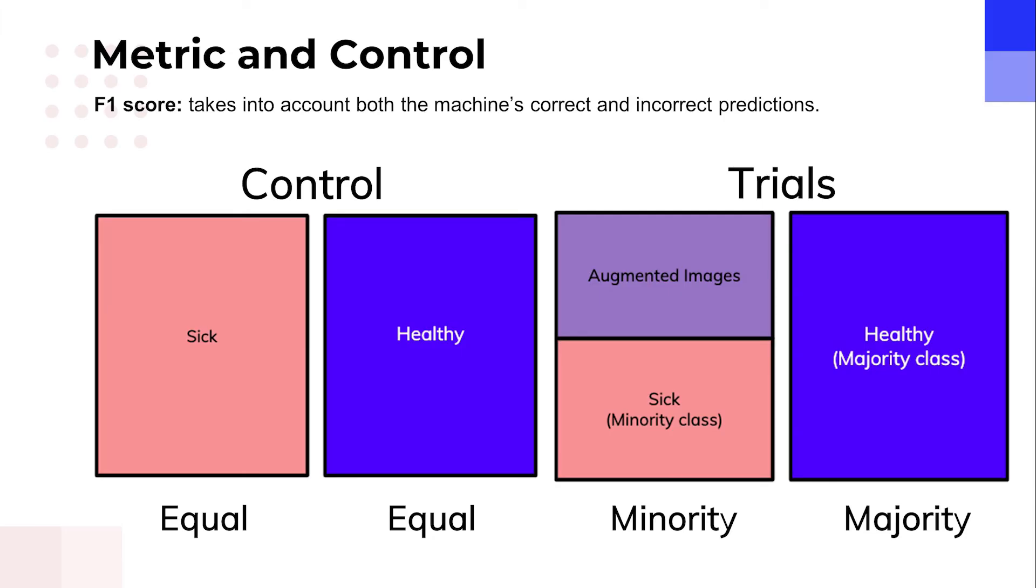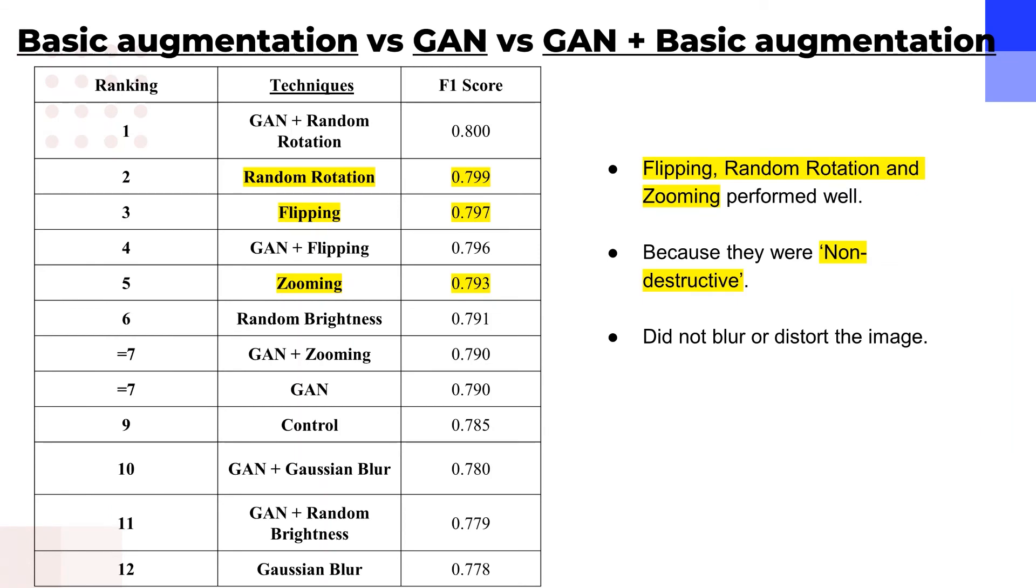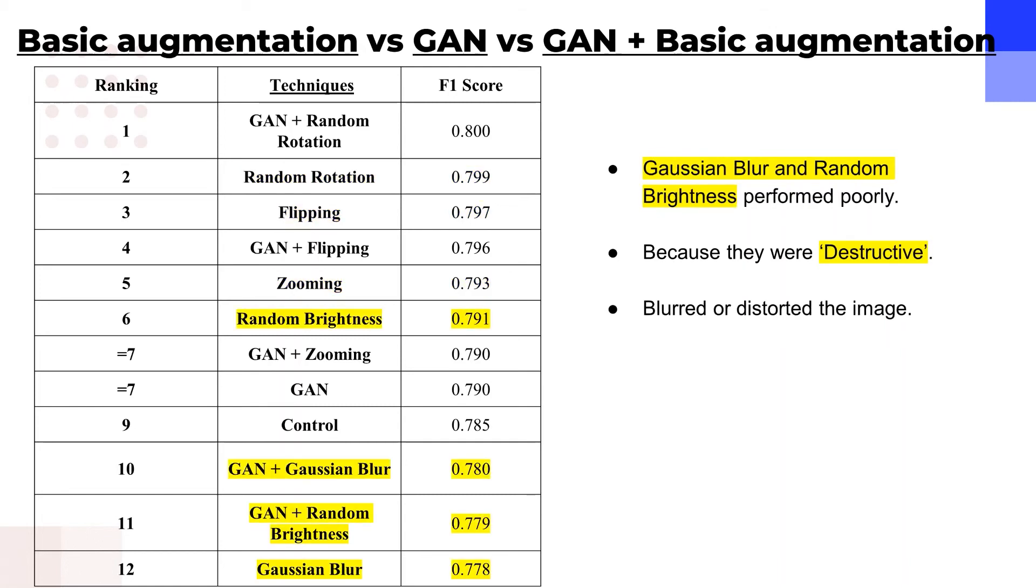The main metric we used was the F1 score. It takes into account both the machine's correct and incorrect predictions. Our controller had equal numbers of original sick and healthy images and so it was a balanced dataset. In general, flipping, random rotation, and zooming performed well. We theorized that was because these methods were non-destructive. In other words, they did not blur or distort the image. Gaussian blur and random brightness performed poorly. We theorized that was because those methods were destructive.